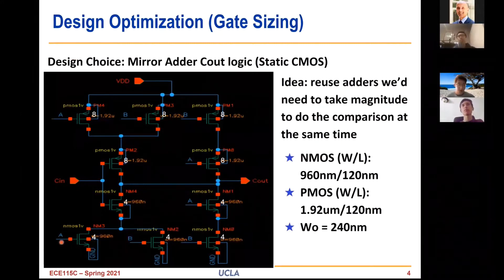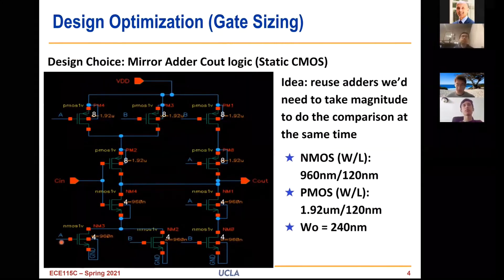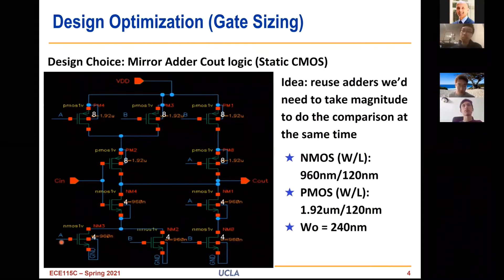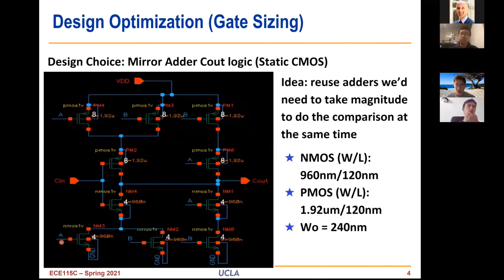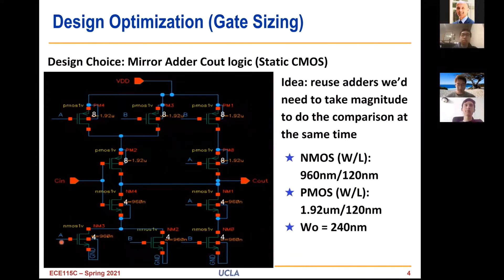Hi, I'm Henry, and I'll be explaining the gate sizing and energy optimization. First up is our Cout block, which uses a mirror adder, static CMOS design. As Robert said, we strip the adder portion because we only need to find out whether our input is greater, not by how much — and this saves on overhead. So we decided to size this to a unit inverter.